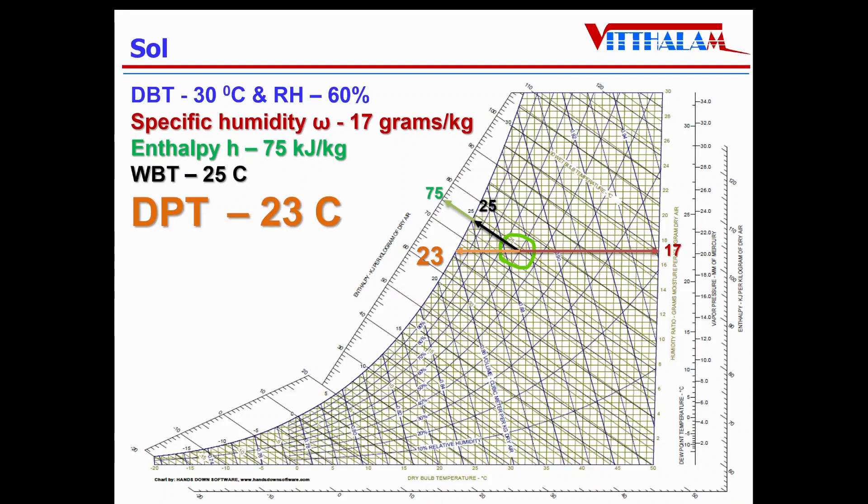That means if such air will bring in the contact of any surface having a temperature less than 23 degrees Celsius, the condensation will start. Or in other words, if I want to reduce the moisture content of the given air by cooling, I have to cool this air at least to the tune of 23 degrees Celsius.